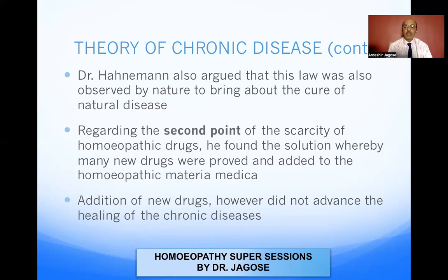Regarding the second point — the scarcity of proved drugs — he found the solution whereby many new drugs were proved and added to the materia medica. As you all know, Dr. Hahnemann in his lifetime proved 99 drugs. However, in spite of adding more drugs to the armamentarium of the materia medica, the problem remained the same. Additions of new drugs did not advance the healing of chronic disease. Patients were cured, but again came back — in spite of increasing the number of proved drugs. So Dr. Hahnemann disregarded the second point also.